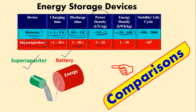On the other hand, energy density is very high for the battery but very low for the supercapacitor. The problem statement is: you need both to be high. For a battery, power density should be higher; for a supercapacitor, energy density should be higher. If you achieve both in one device, you've done a great job.